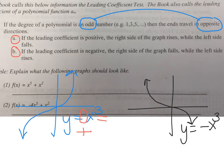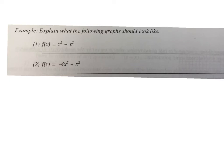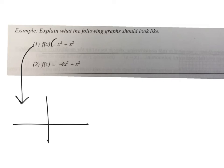There are two examples. Example 1 says f of x equals x to the 5th plus x squared. The degree is odd, so the ends go in opposite directions — either up then down, or down then up. Because the leading coefficient in front of x to the 5th is positive, we know the left side goes down and the right side goes up. But we need to write this using proper mathematical terminology.